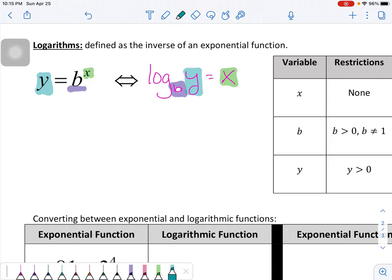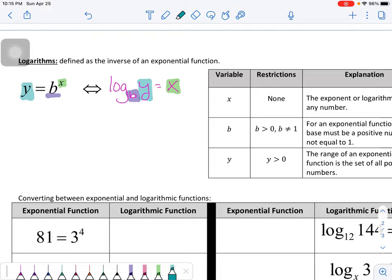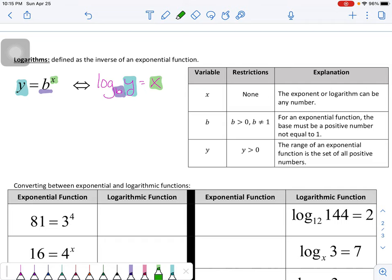Now, you've got three variables, y, b, and x, and you have certain restrictions on them. So let's take a look at the restrictions. x, the nice part is x has no restrictions. x can be anything. So your exponent here can be anything. Your logarithm can equal any number.